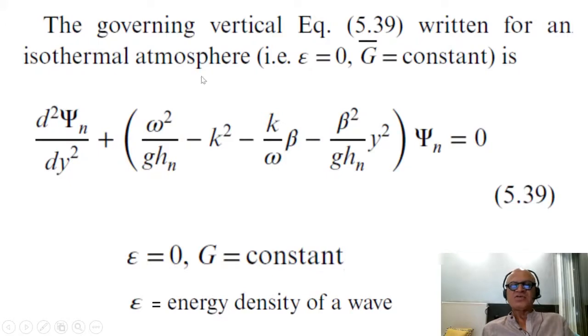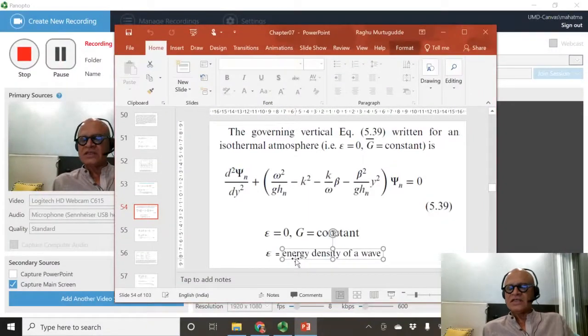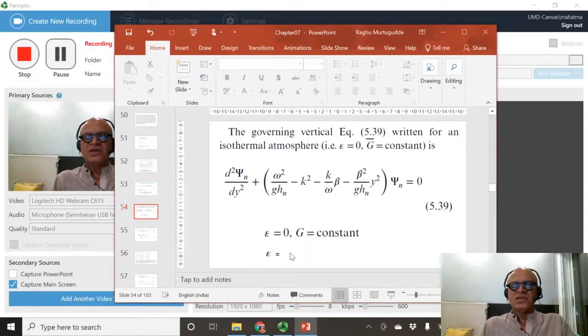So equation 539, which was our governing equation written in terms of the stream function, for an isothermal atmosphere, the gradient is zero and G-bar is constant, right? Az plus C. And epsilon is the energy, sorry, I wrote it wrong. The epsilon here is just the gradient of, I should delete that nonsense.